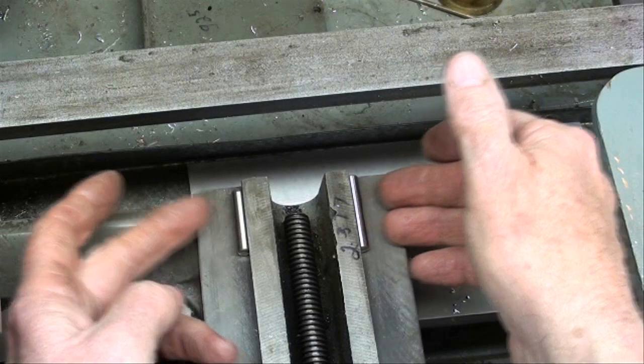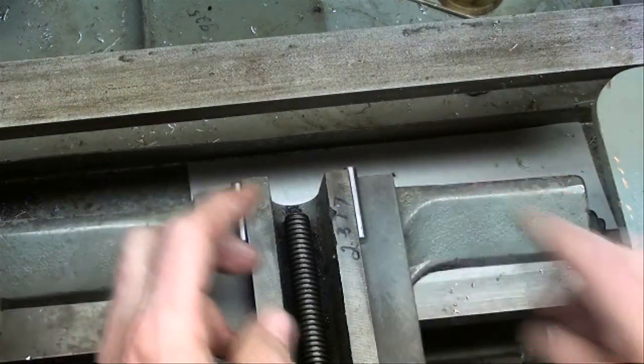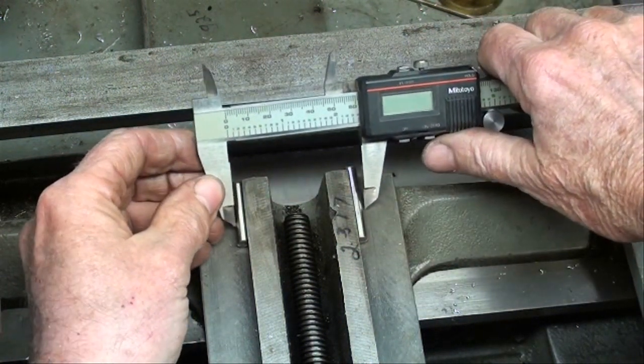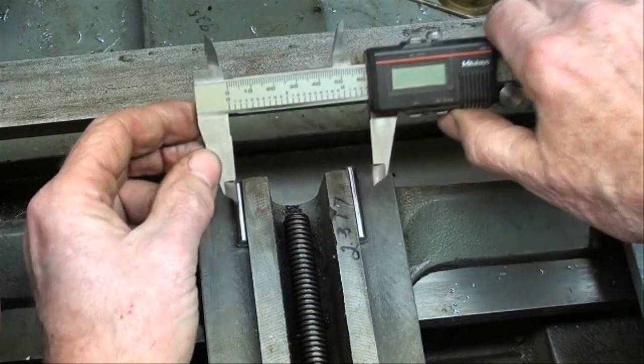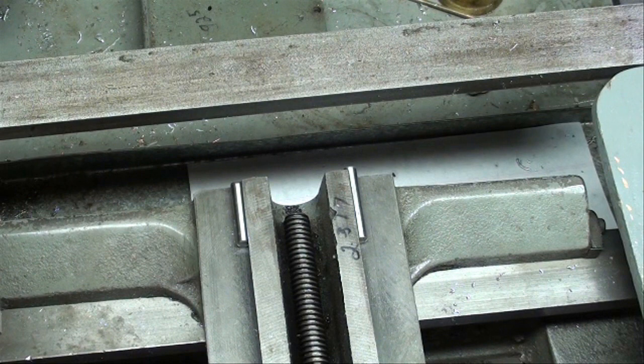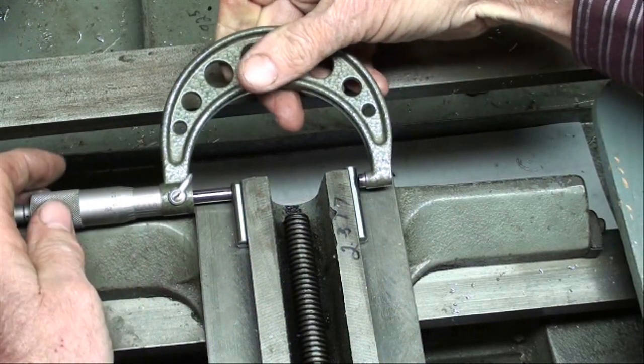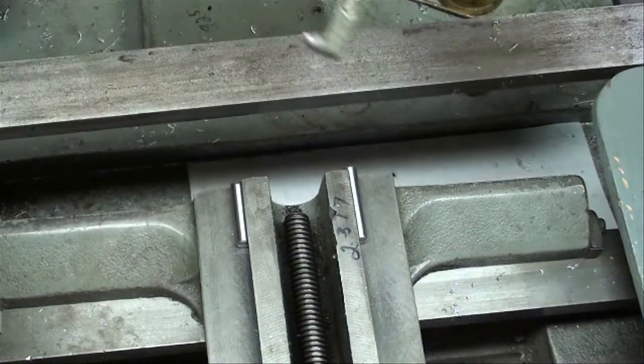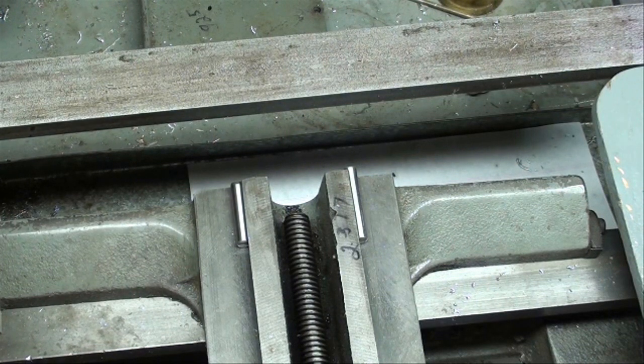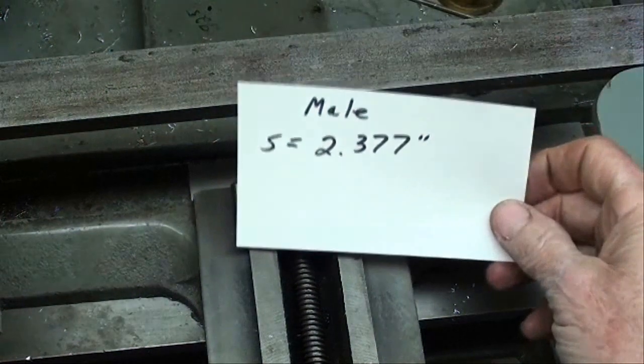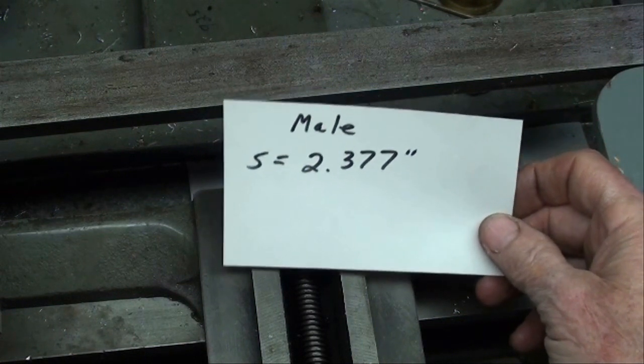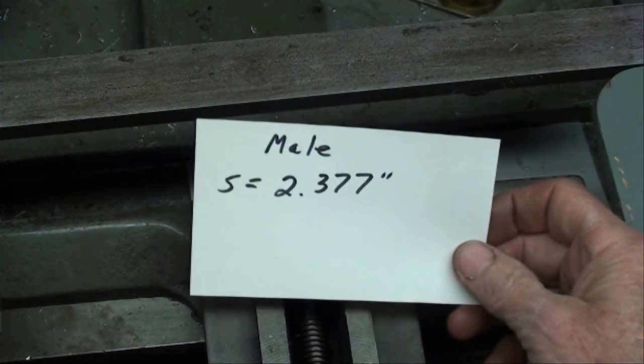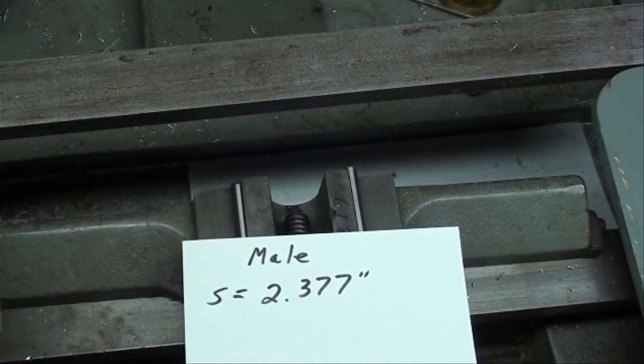Bring those up snug like that. I prefer to use a micrometer over a caliper - I just think you get a little bit too much play with calipers. So I'm going to use a three inch Mitutoyo and measure it like this. I come up with this dimension and we're going to call that S for the purposes of the formula. It's 2.377 inches for the male.